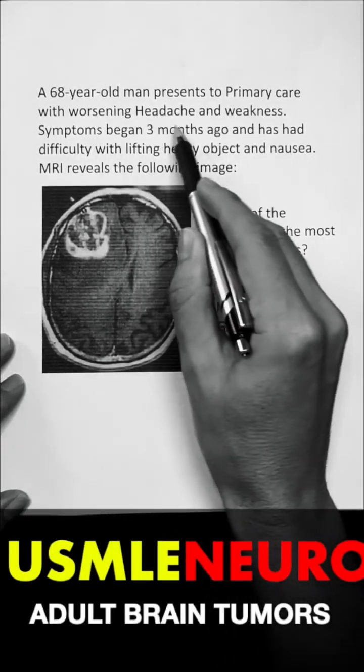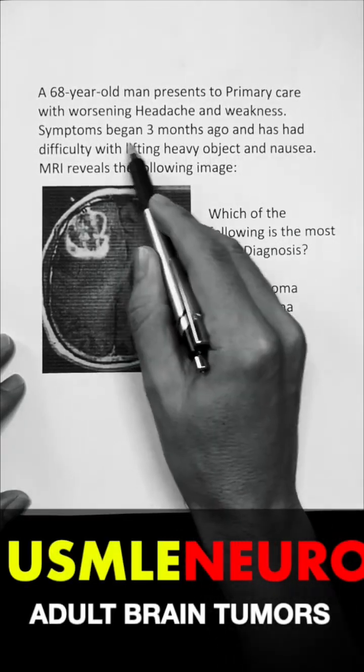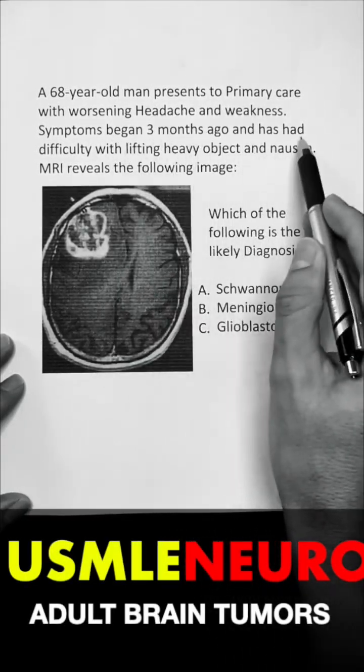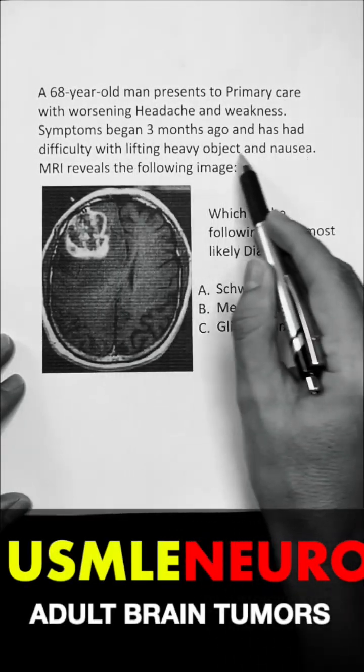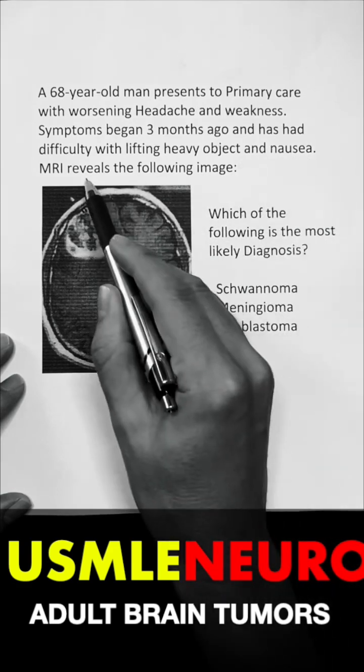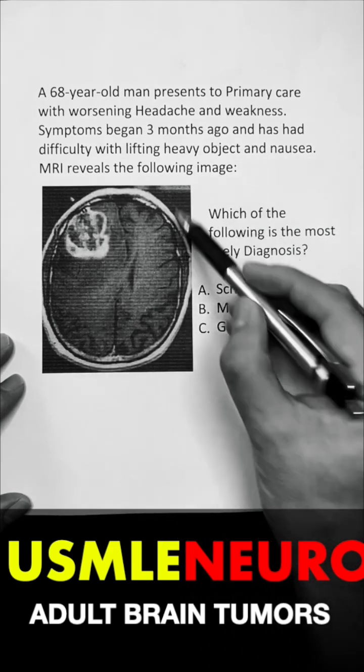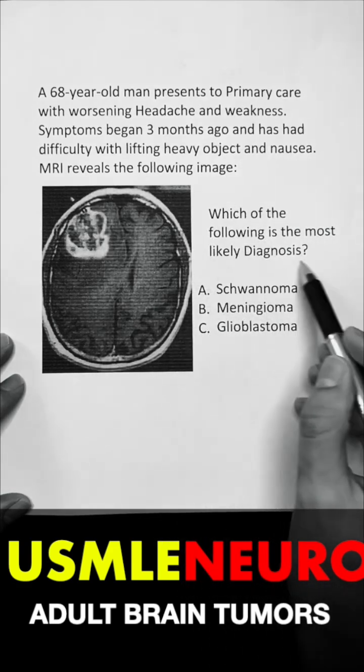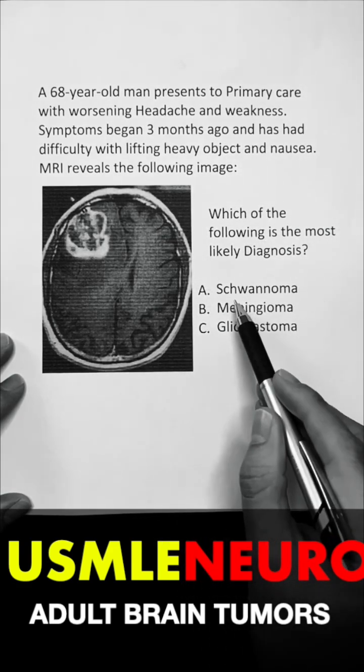A 58-year-old man presents to primary care with worsening headache and weakness. Symptoms began three months ago, and he has had difficulty lifting heavy objects and has had nausea. MRI reveals the following image. Which of the following is the most likely diagnosis?